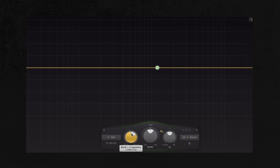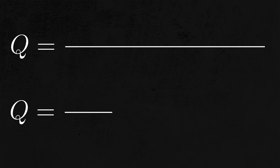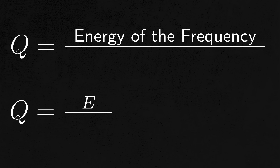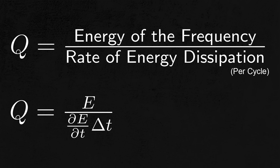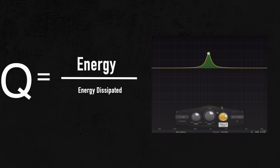What is an EQ? An EQ changes the frequency distribution of a signal. There are three main parameters: the frequency, which changes the center frequency around which the EQ affects; the gain, which is how much gain is applied to that center frequency; and the Q. The Q stands for quality factor, a term from physics. It means the ratio of the energy of a frequency to the rate at which energy is dissipated per cycle. If you have a really high Q value, the rate at which energy dissipates must be really small, and this is why a high Q causes a sharp resonance that decays over a long time.